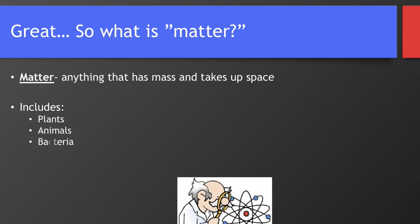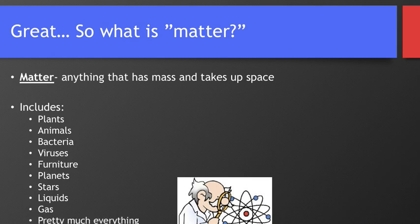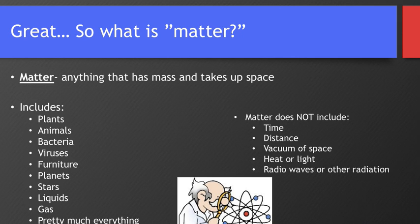Matter includes plants, animals, bacteria, viruses, furniture, planets, stars, liquids, gas, and pretty much everything has matter. Matter does not include time, distance, the vacuum of space, heat or light, or radio waves or any other type of radiation. Those things do not require particles. They do not take up space. They're kind of intangible things that we can measure but we can't actually pick it up in our hands. So matter has to have mass like atoms and it has to take up some volume of space.